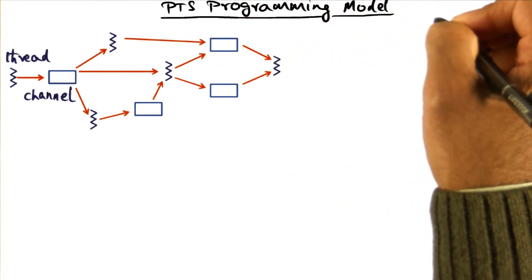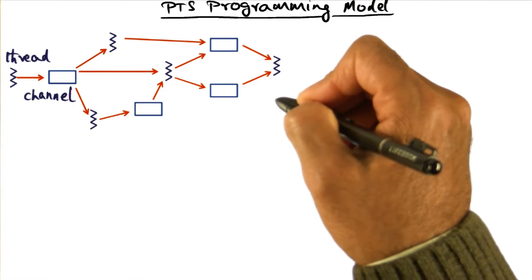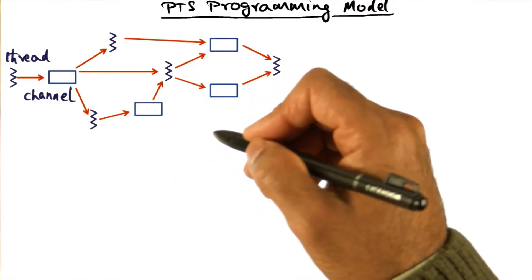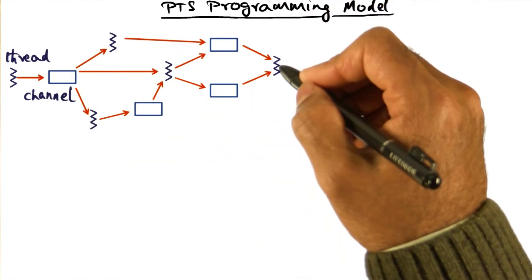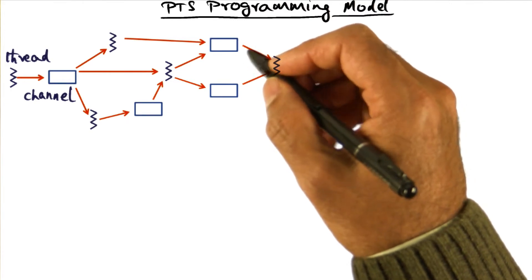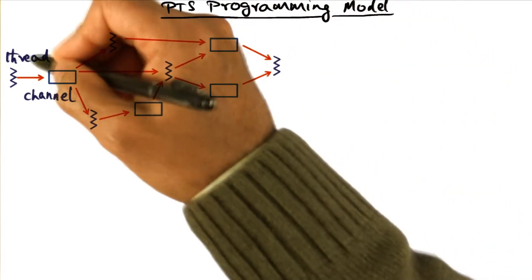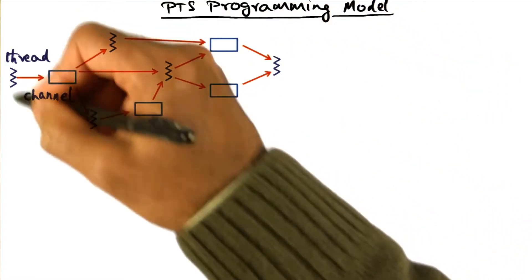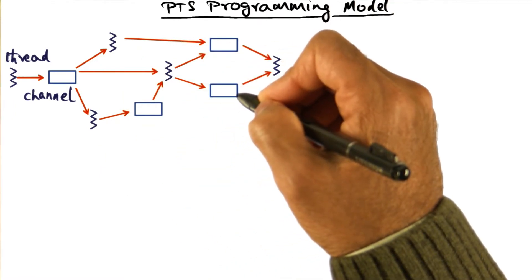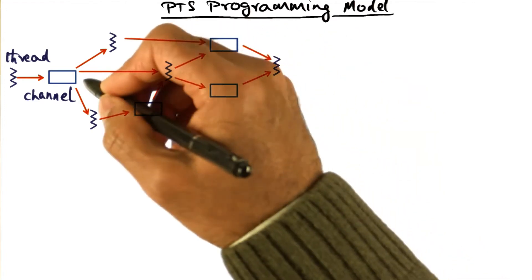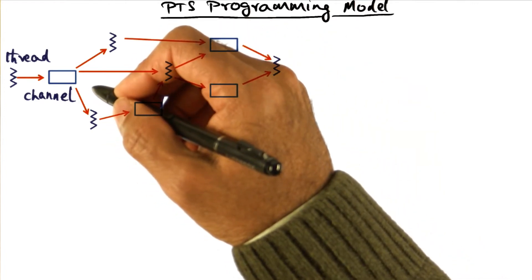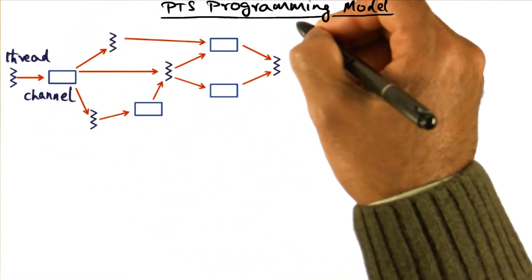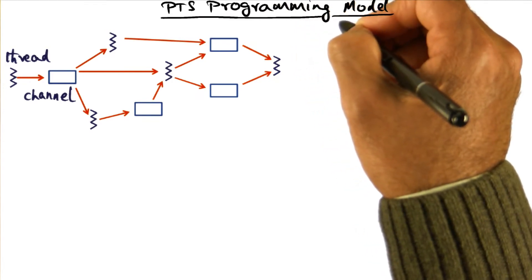The PTS programming model is very simple and straightforward. It's a distributed application, and in the distributed application there are threads and channels. These are the two high level abstractions provided in the programming model. The computational graph that you generate using the PTS programming model looks very similar to a Unix process socket graph. So the transition for a programmer familiar with the socket API to programming using the abstractions provided by PTS is not significant.